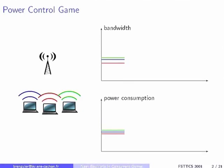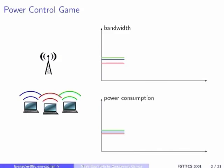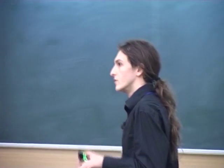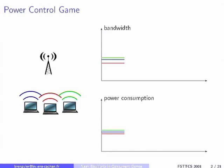I will try to first motivate the study of Nash Equilibria for computer scientists by giving you a small example you can relate to. In this room, we have an antenna over there, and there are some laptops that are open and communicating with this antenna wirelessly. You have to imagine that you can control the power you are using to emit to this antenna. Here on this graphic is the bandwidth you get if everyone is using about the same power.